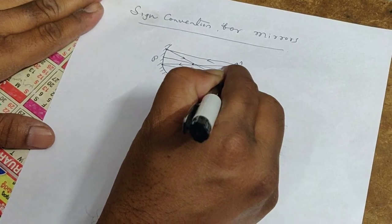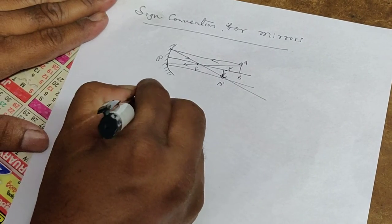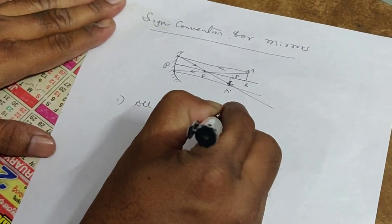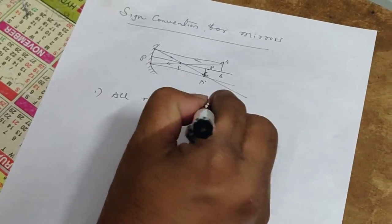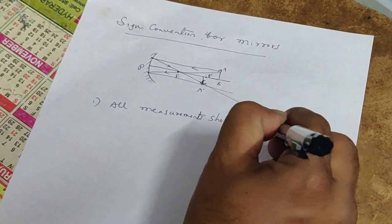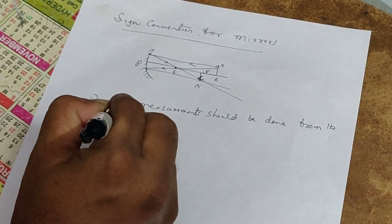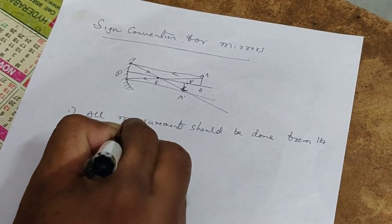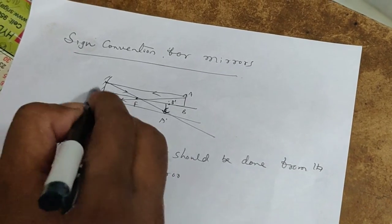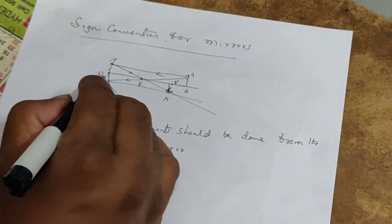First point: all the measurements should be done from the pole of the mirror. So this is the starting point — all measurements should be done from this pole of the mirror.